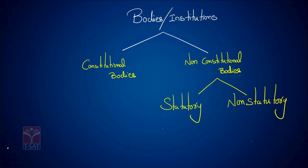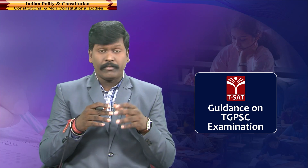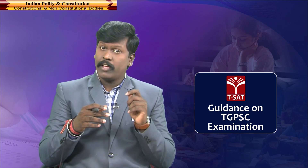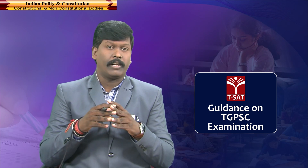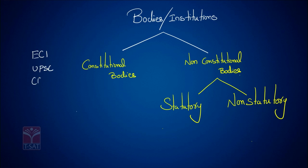Coming to constitutional bodies — what is the meaning of a constitutional body? Any institution or body which is established and derives its authority, duties, and functions directly from the constitution is called a constitutional body. Examples include the Election Commission of India, Union Public Service Commission, CAG (Comptroller and Auditor General of India), National Commission for SC, National Commission for ST, and National Commission for BC. All these are constitutional bodies.